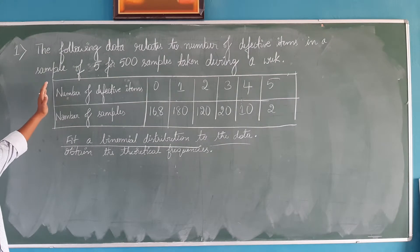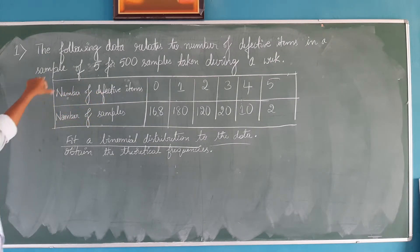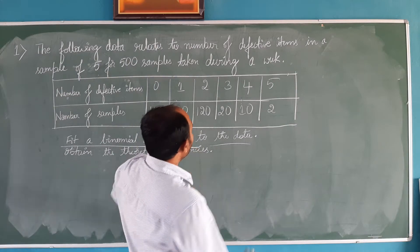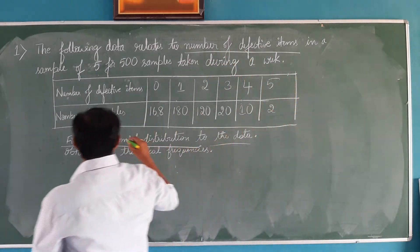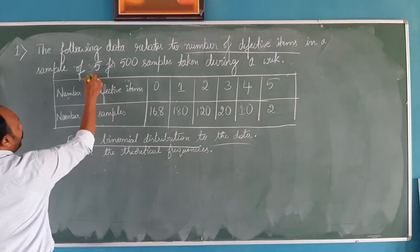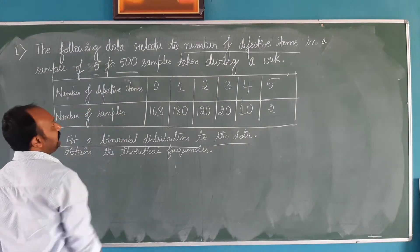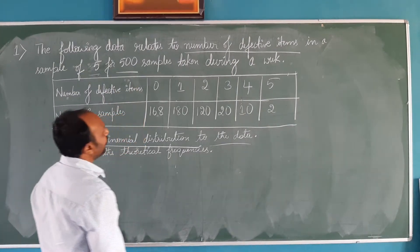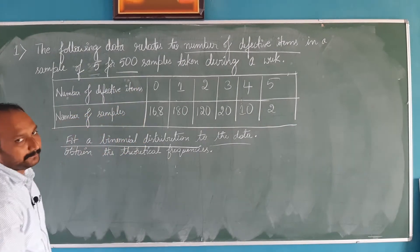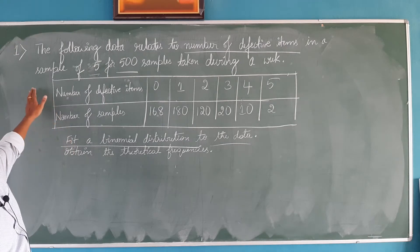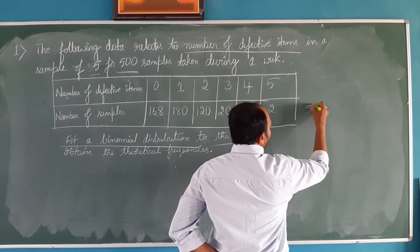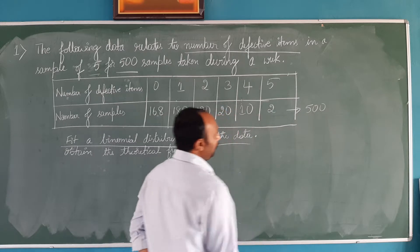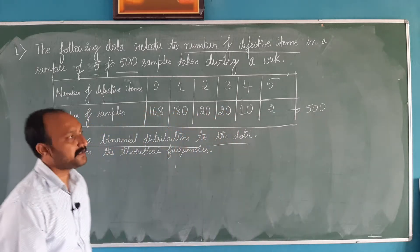Here we have been presented data in terms of a table. Please go through this question. The following data relates to number of defective items in a sample of 5 for 500 samples taken during a week. Totally, how many samples we have taken? Totally we have taken 500 samples.